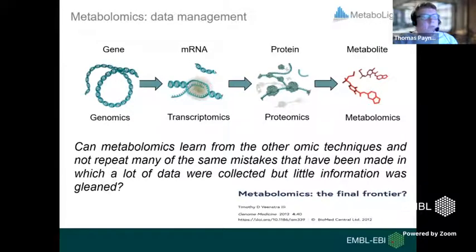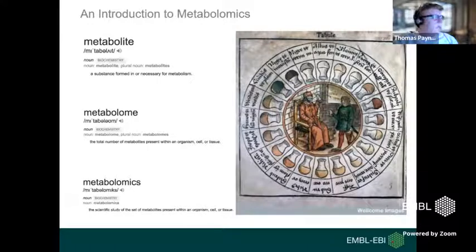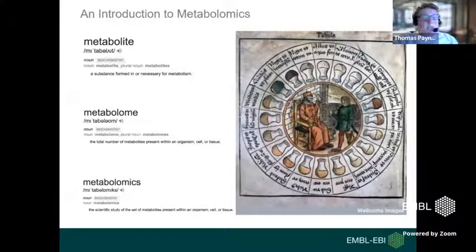The question is: can metabolomics learn from other omics and not repeat mistakes where a lot of data were collected but little information gleaned? For anyone new, a metabolite is a substance formed in or necessary for metabolism. The metabolome is the total number of metabolites present within an organism, cell, or tissue. Metabolomics is the scientific study of that set of metabolites — going back historically to when they used to smell and look at the colour of urine, but now with rapid development in instrumentation and computational power.